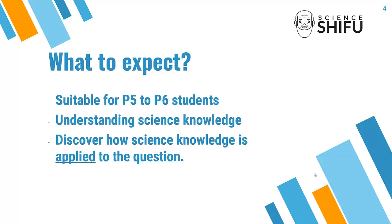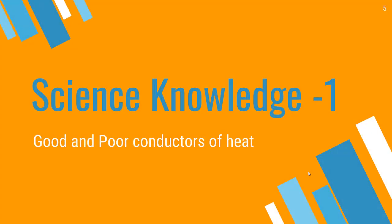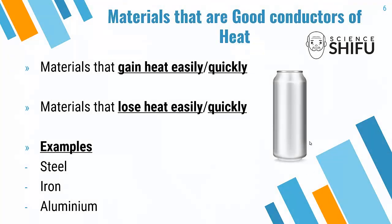Let's learn the first science knowledge: good and poor conductors of heat. For materials that are good conductors of heat, they will gain heat quickly or easily. Take note that it works both ways — a good conductor of heat will not only gain heat quickly, the material will also lose heat quickly or easily.